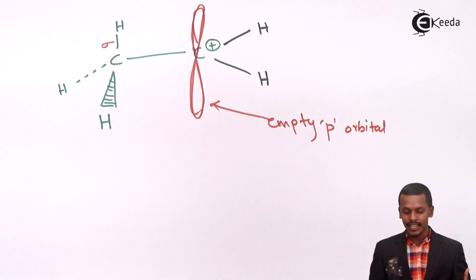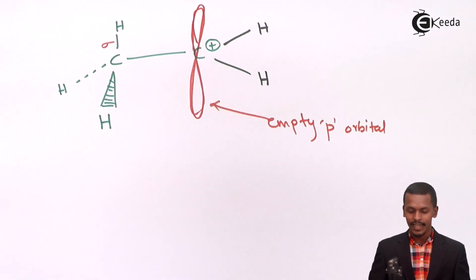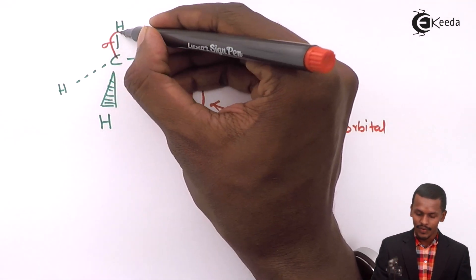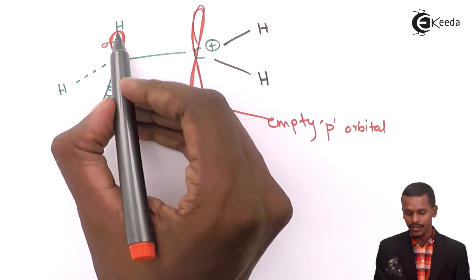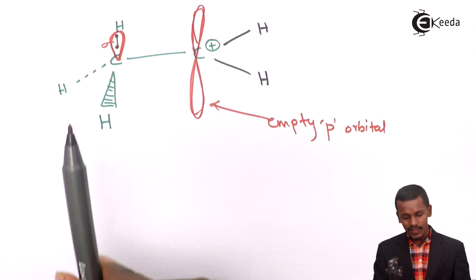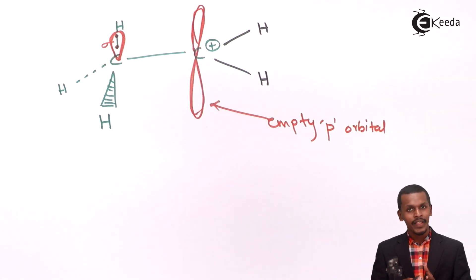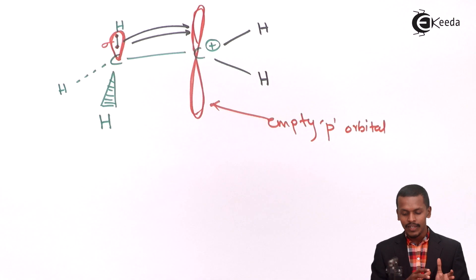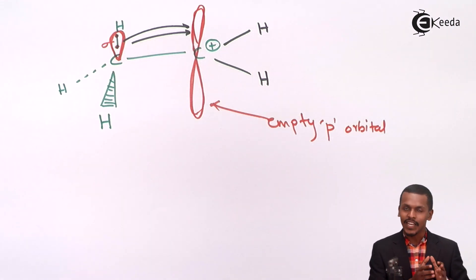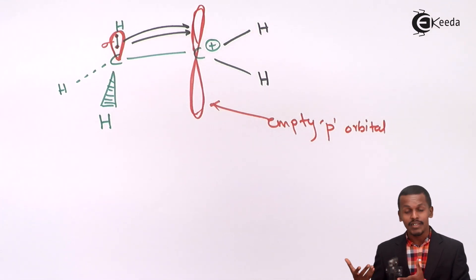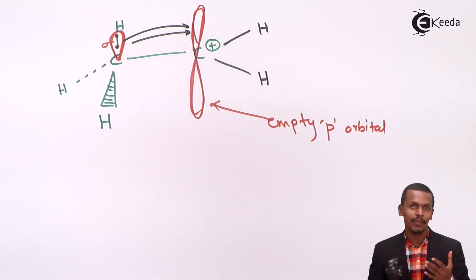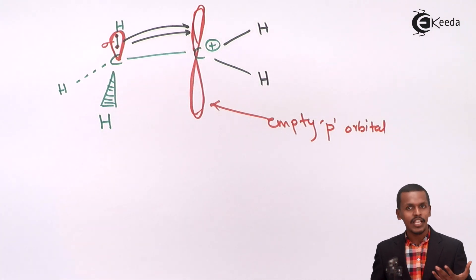Because the sp3 carbon forms bonds using sp3 hybrid orbitals based on p character, the sigma bond orbital containing two electrons is closely aligned with the empty p orbital of the carbocation. Since they are close and properly oriented, delocalization of electrons from the sigma bond to the empty p orbital can occur. This delocalization of electrons from a sigma bond to an electron-deficient empty p orbital is basically known as hyperconjugation.